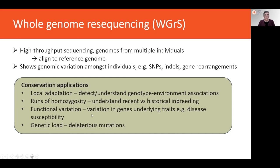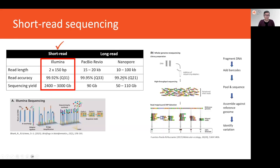Whole genome resequencing is also useful for understanding functional variation across individuals, disease susceptibility in threatened species, and genetic load resulting from ongoing small population size. These approaches tend to use Illumina sequencing-by-synthesis techniques — short-read approaches that provide an extraordinary amount of sequence data at a very cost-effective price. DNA is fragmented, individual barcodes are added to fragments, these are pooled and sequenced, and then assembled against a reference genome to identify variation across individuals.